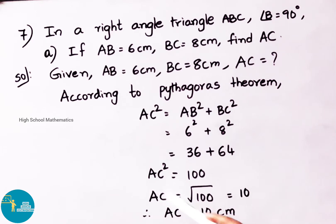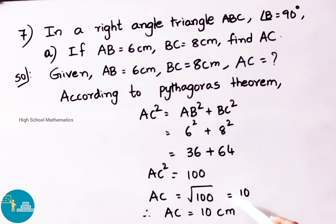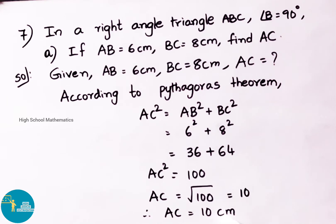Now AC equals to square root of 100. The square root of 100 is 10. Therefore AC value is 10 centimeter.